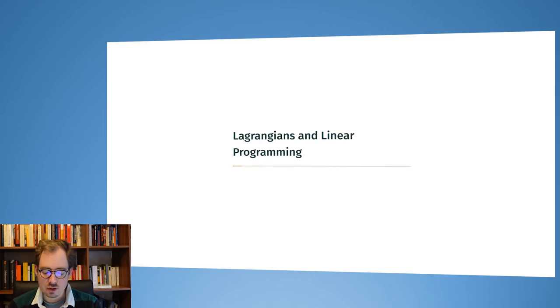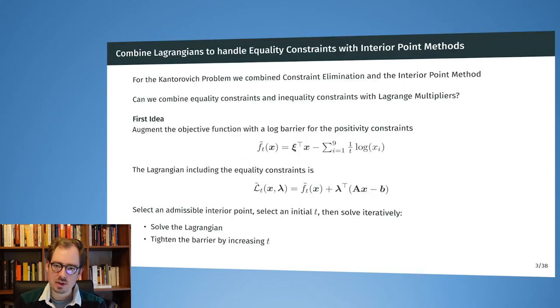So in the last lecture we have seen two different approaches to handle equality constraints. First of all, constraint elimination, and second, the Lagrangian approach. And for the constraint elimination approach we could solve the Kantorovic problem. So moving the soldiers in an economical fashion from barracks to their fighting positions. But we haven't concluded the lecture by using the second approach, the Lagrangian approach, to solve the same problem. Because there are a couple of difficulties associated with that.